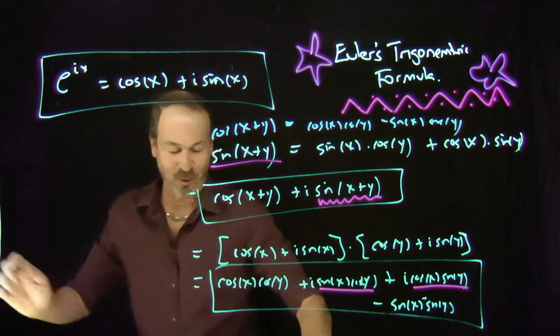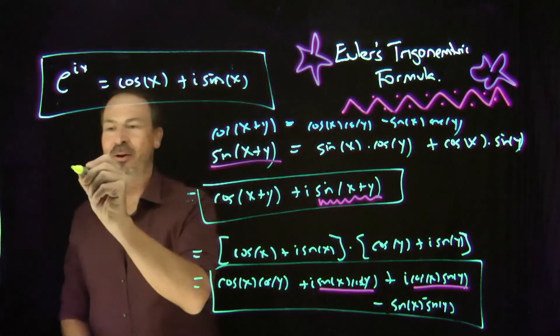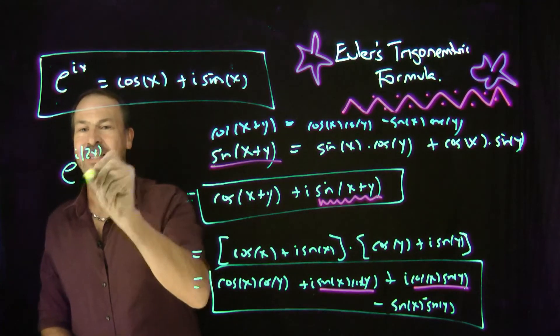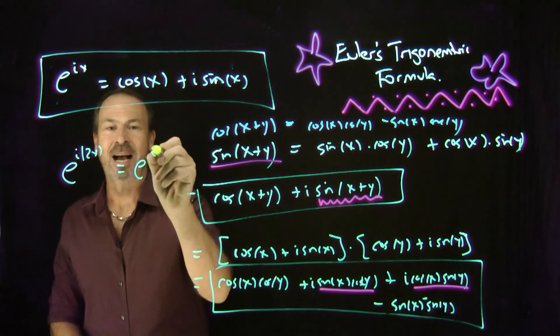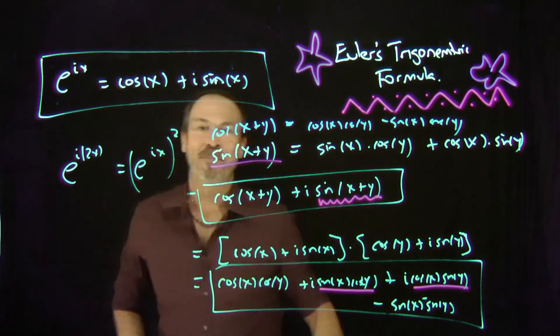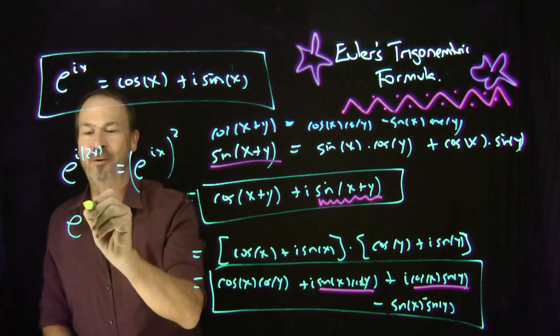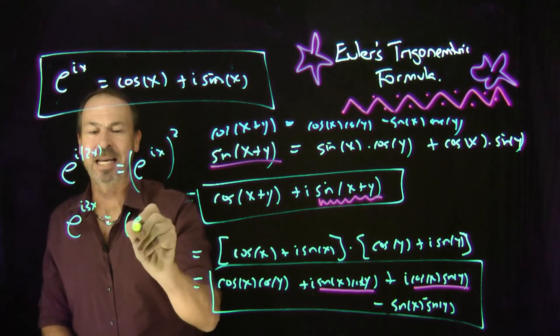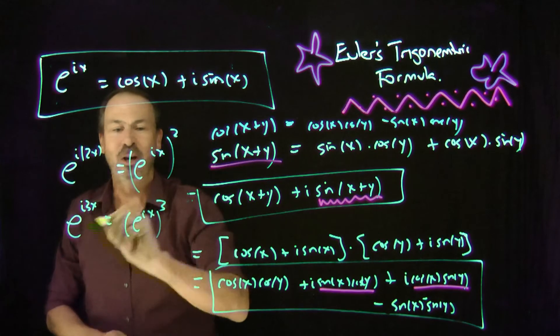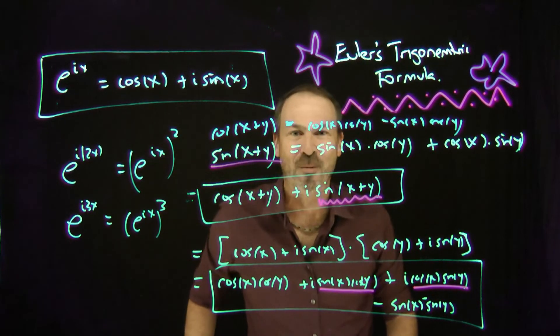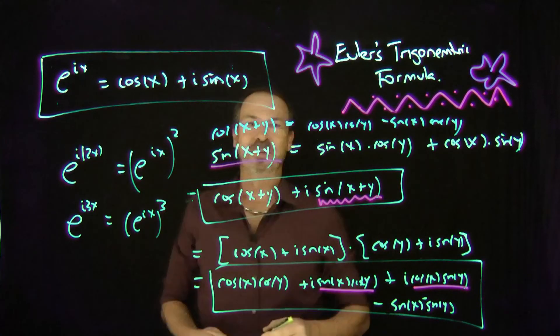So I bet now you could work out all the double angle formulas. Look at e to the i2x. That is really just e to the ix squared by basic exponent laws. I bet you can now do triple angle formulas. e to the i3x would just be take e to the ix, take this formula and cube it. I bet you can do the subtraction formulas. I bet you can do them all now.